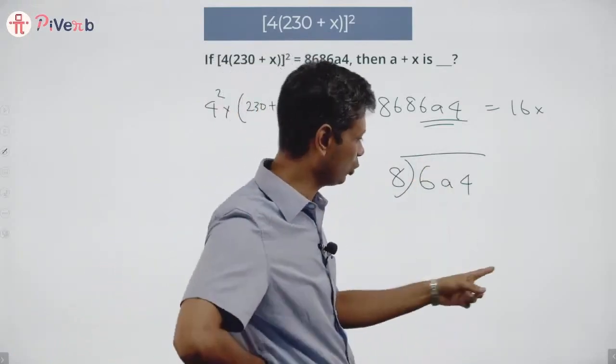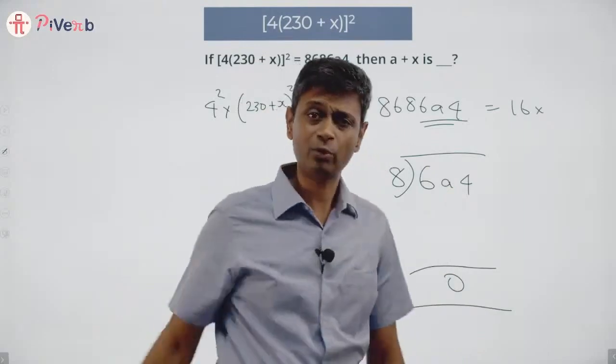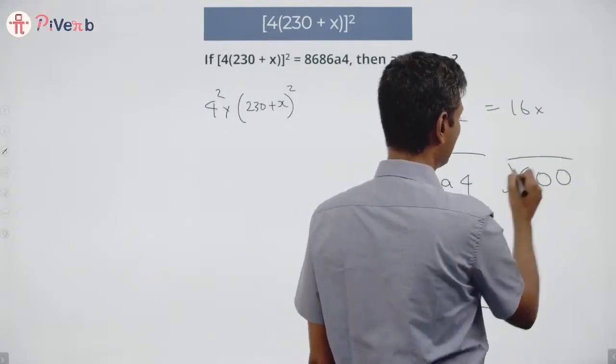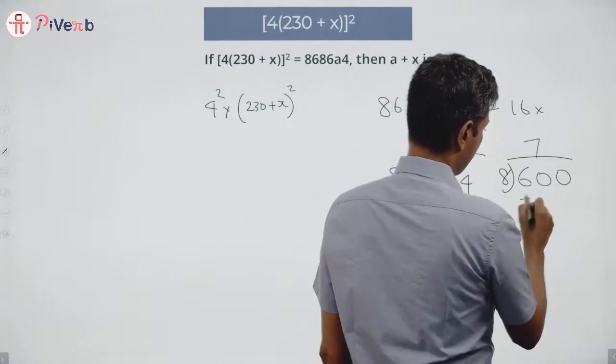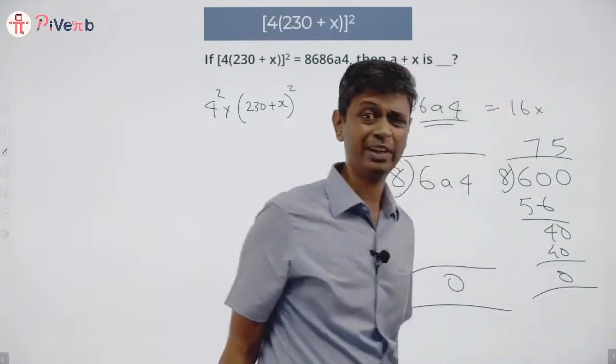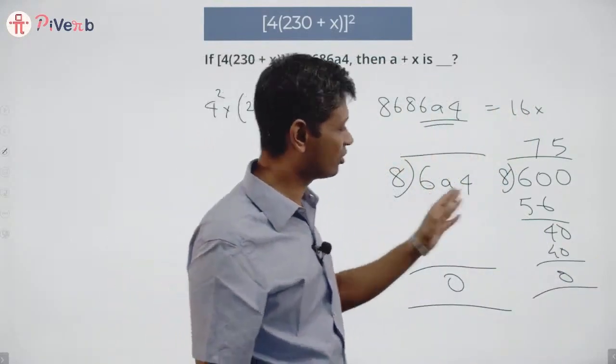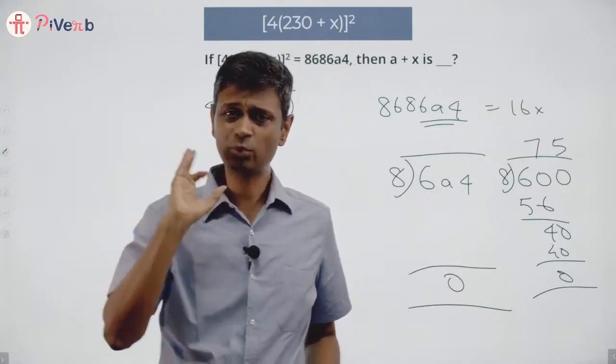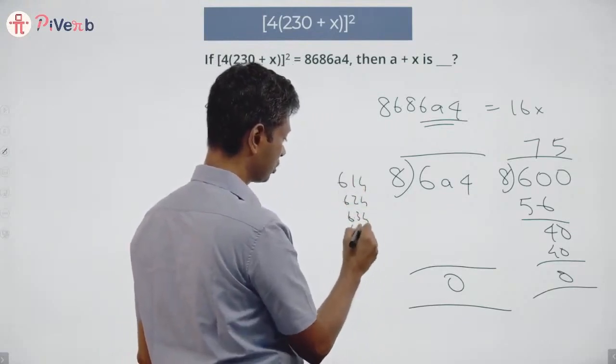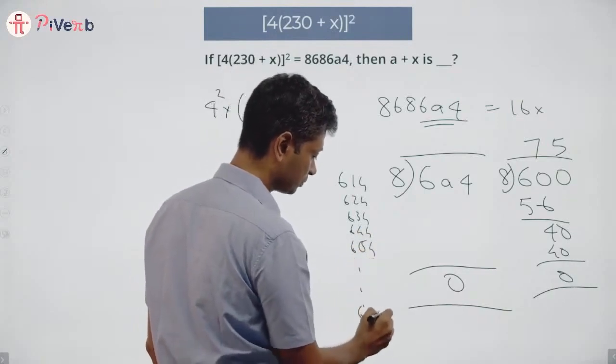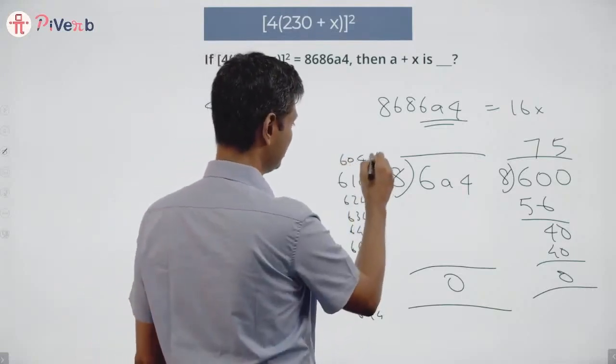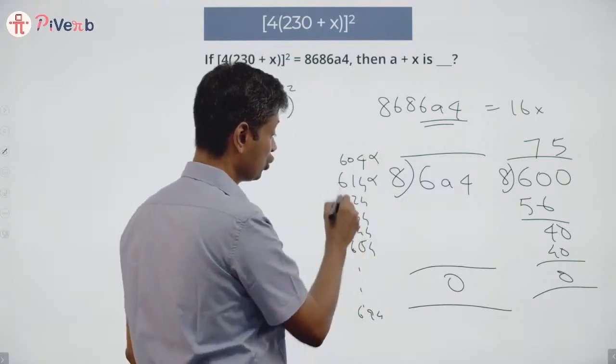So 8 into something with no remainder I should get 6a4. So 600 divided by 8. Let's do 7 times 56, 40, 5 times 40. 600 is a multiple of 8. The last two digits - 600 plus a4 is what we are looking at. We are looking at numbers like 614, 624, 634, 644, 654, all of it till 694 or 604. 600 is a multiple of 8. Add 4 it won't work, add 14, 624 is a multiple.